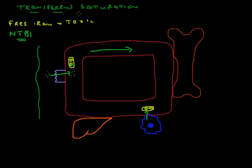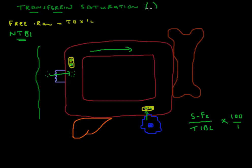Transferrin saturation can tell us whether there is too little or too much iron going around in the body, which can be very helpful in diagnosing certain diseases. Transferrin saturation is defined as serum iron — the iron bound to transferrin — divided by the total iron binding capacity, times 100, expressed as a percentage. To understand this, you need to know what total iron binding capacity means.